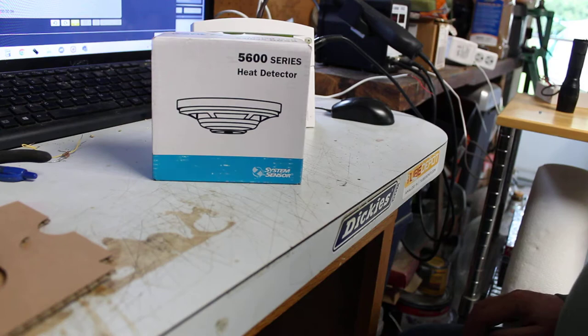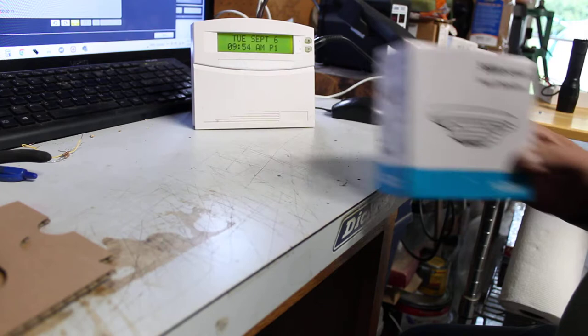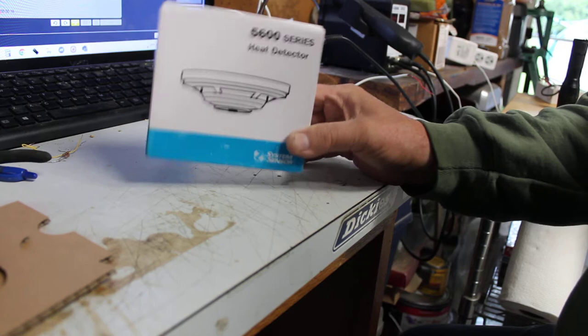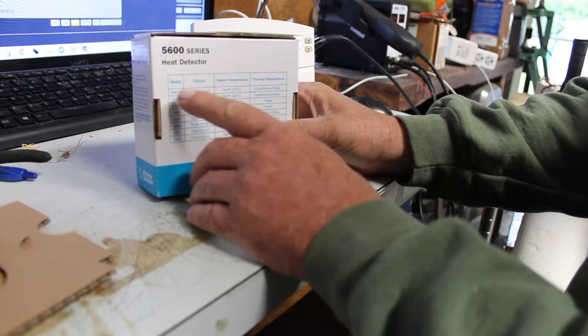Morning guys, this is Gary from G&G Electronics. Today I'm going to be showing you how to hook up a rate of rise heat detector onto your Concord 4 or Concord Express. A subscriber wanted to know how to hook up a heat detector and I'm going to show you how to do it.